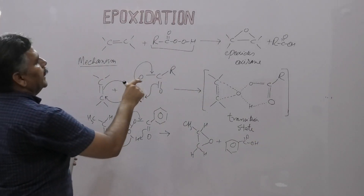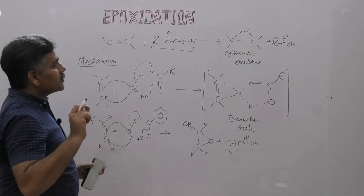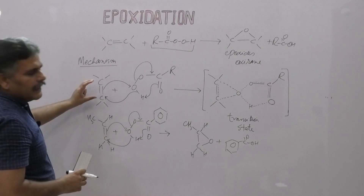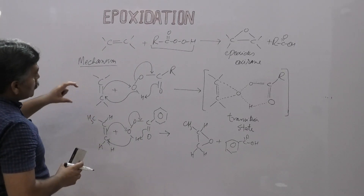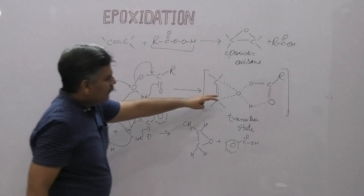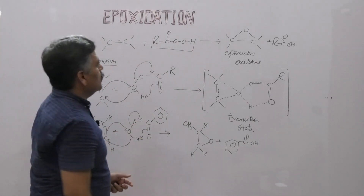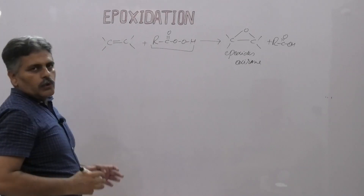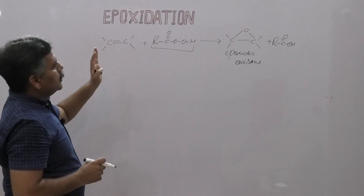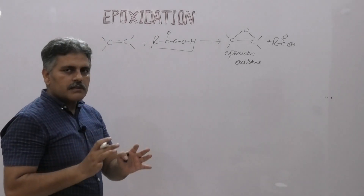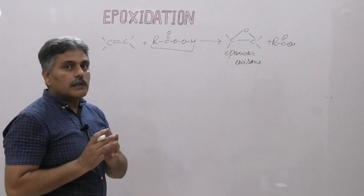The transition state shows that oxygen adds at the carbon-carbon double bond and never disrupts the stereochemistry of the alkene, whether it is cis or trans. Now we will discuss the stereochemistry — oxygen attaches on the same side of the carbon-carbon double bond and never disturbs the geometry of any alkene. Since all bonds are formed and cleaved simultaneously, this reaction retains the stereochemistry of the alkene.